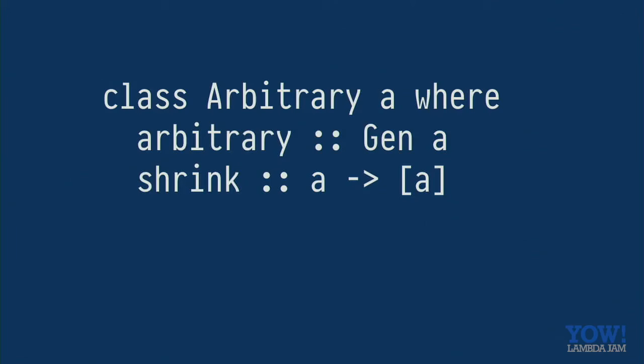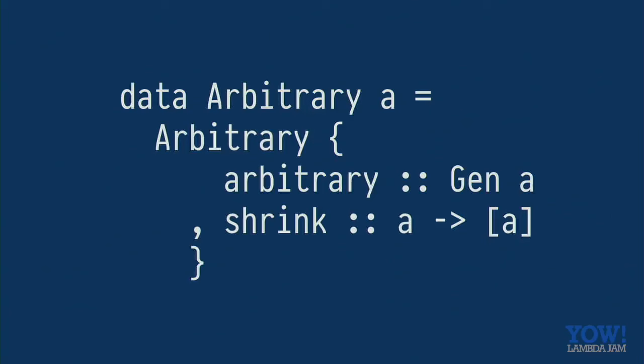We've got our arbitrary type class. And we could start by making arbitrary a data type. So we can pass it around and write combinators which work on arbitrary. But one of the problems with this is that arbitrary in this situation is an invariant functor. The A appears on both sides and the shrink function. So we've lost the great interface that gen has. One possible solution would be to separate the parameters and make it a profunctor.